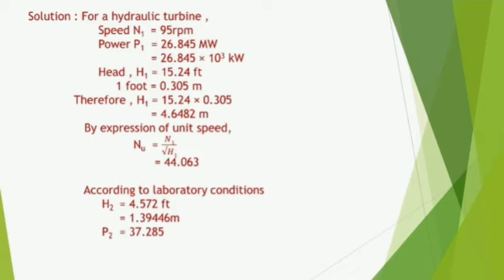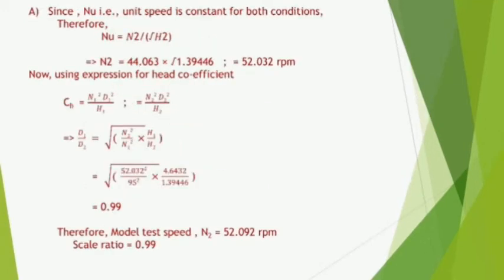Under laboratory conditions: h2 = 4.572 feet = 1.39446 meter, and p2 = 37.285 kilowatt. Since unit speed (nu) is constant for both conditions, nu = n2 / √h2, where n2 is the speed of the model and h2 is the head of the model. Substituting, we find n2 = 52.032 rpm.